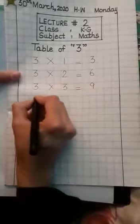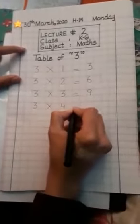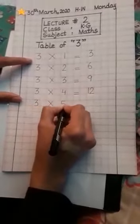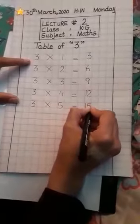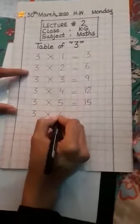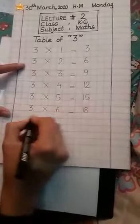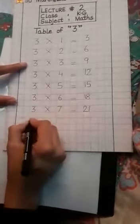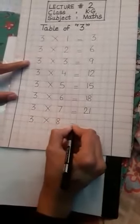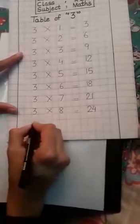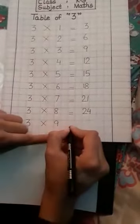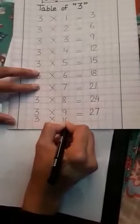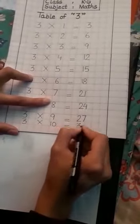Twenty-four. Three nines are twenty-seven. Three tens are thirty. Thank you.